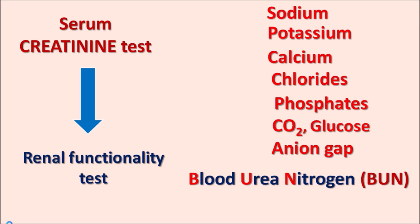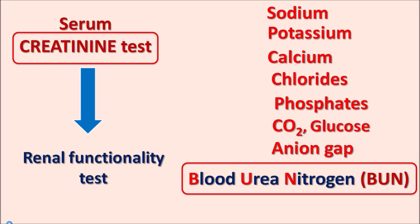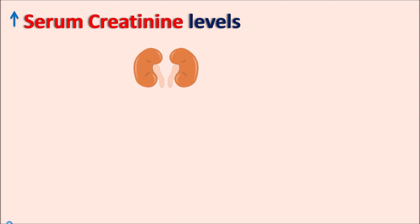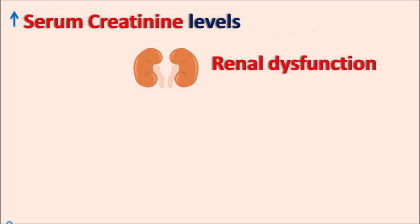Among these tests, two are more important for assessing renal functionality: serum creatinine and blood urea nitrogen. Both creatinine and urea nitrogen are metabolic end products estimated within the blood, and when elevated they may indicate renal dysfunction. Elevated serum creatinine is associated with decreased GFR (glomerular filtration rate), indicating reduced kidney function.